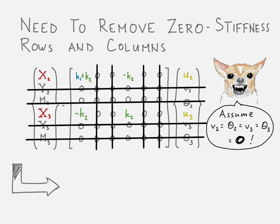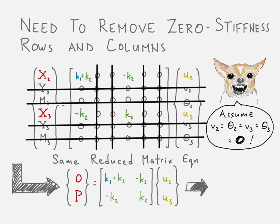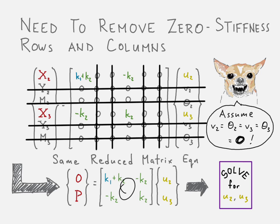We're left with the same reduced matrix equation that we had if we assumed one degree of freedom — one dimension — at the start. Same exact equation. And from there, of course, we can go ahead and solve by inverting the matrix, multiplying by the forces, and solving for our displacements.